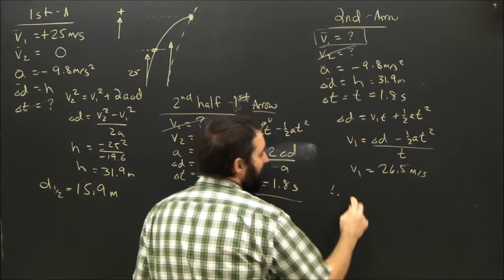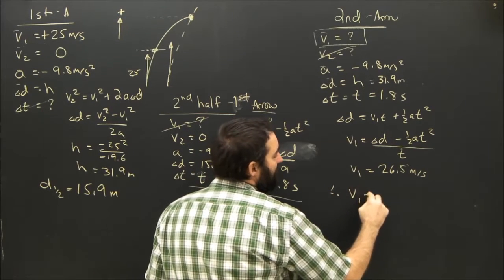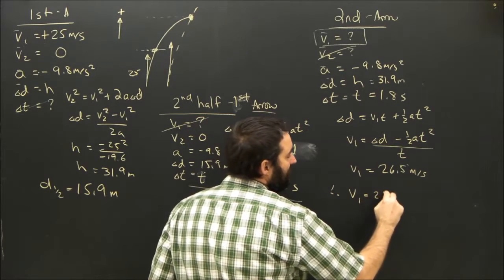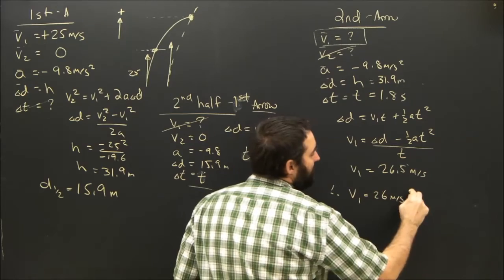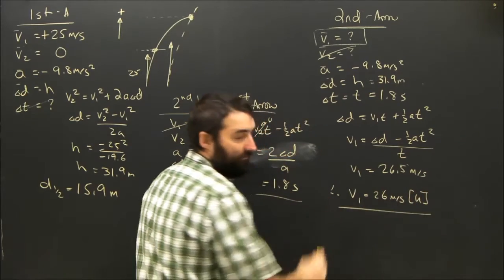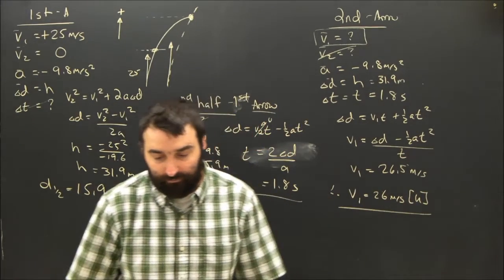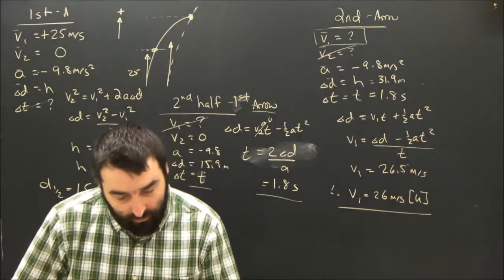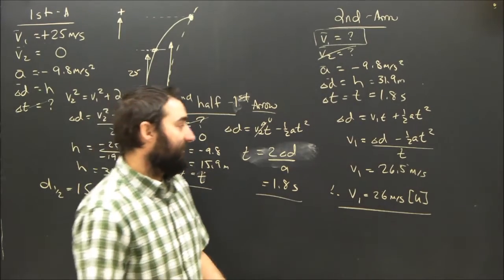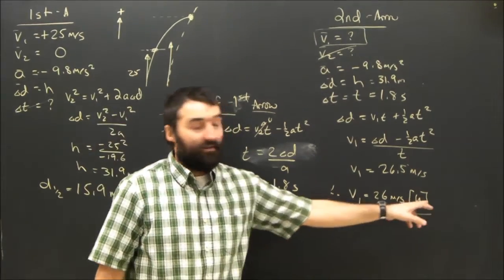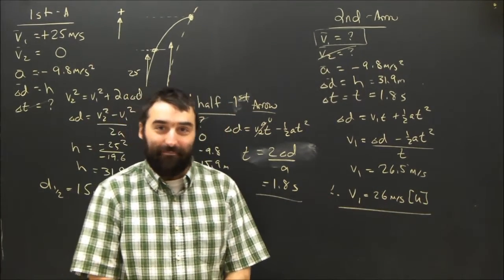Therefore, the initial velocity of the second arrow is 26.5 meters per second upward. The question asks for launch speed, so leaving out the direction is acceptable: the launch speed of the second arrow is approximately 26.5 meters per second.